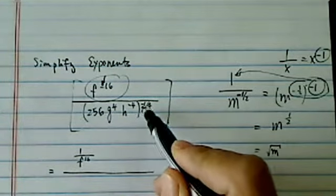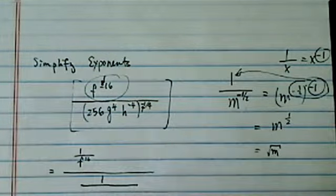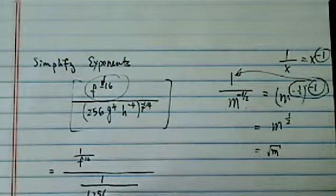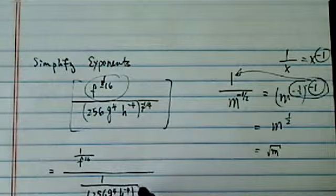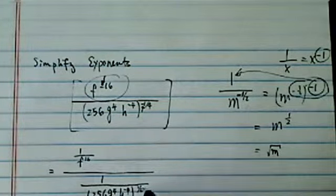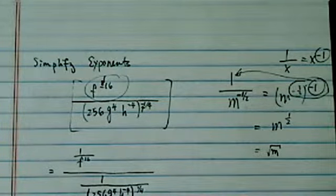Now I have another one over here. Since it's 1 over that, I'm just going to write it literally, 1 over 256, g to the 4, h to the minus 4. Now, if you notice, there is another minus sign, but it's inside the parentheses. So I'll deal with that later.